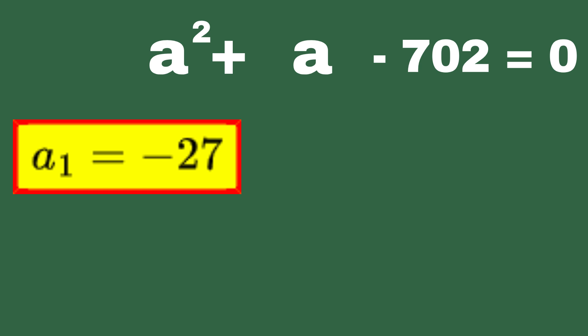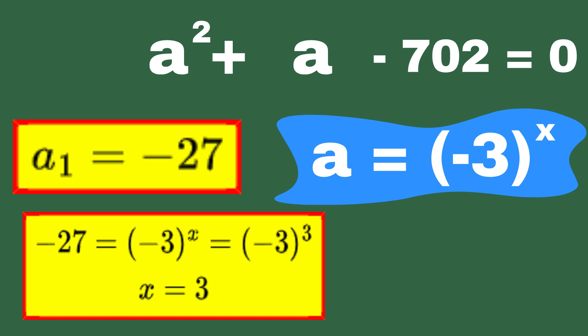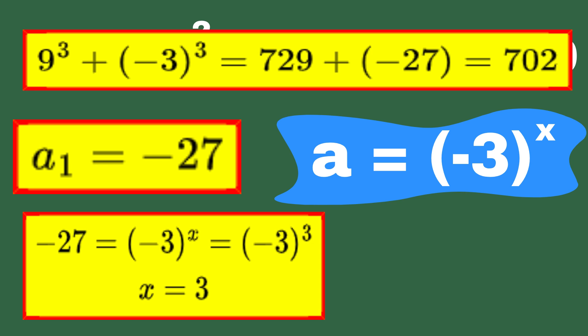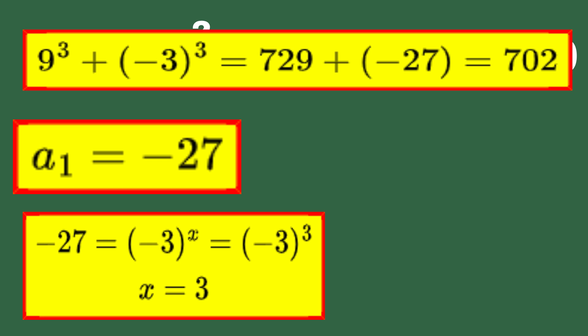The first case is a1 equals minus 27. It is easy to see that x is 3 since minus 3 to the power of 3 is minus 27. So, that's one solution down. Let's check it and see, 9 to power of 3 is 729. Now let's add to it minus 3 to power of 3 which equal to minus 27 and we get 702.